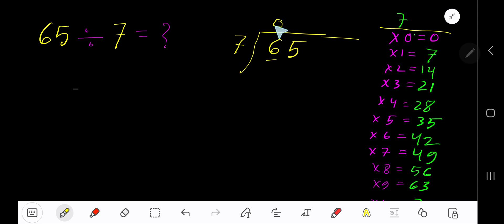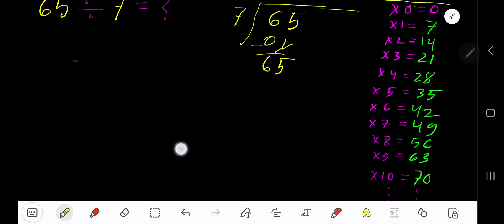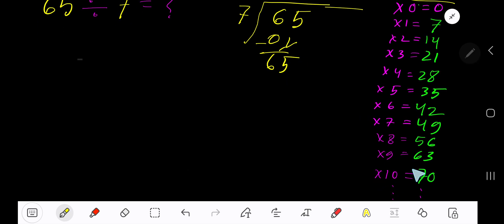0 times, as 6 is less than 7. 0 times 7 is 0. Subtract 6, bring down the next digit. 7 goes into 65 how many times? 10 times 70, which is greater.